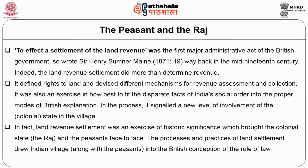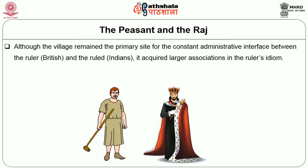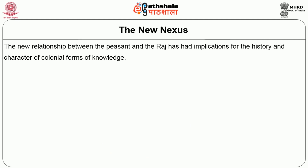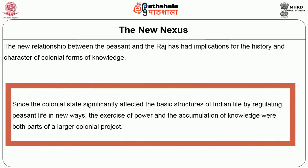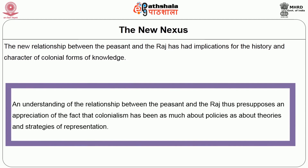The processes and practices of land settlement drew Indian villages along with the peasants into the British conception of the rule of law. Although the village remained the primary site for constant administrative interface between the ruler British and the ruled Indians, it acquired larger associations in the ruler's idiom. This module is an attempt to understand the contours of the relationship between the peasant and the Raj, which has had implications for the history and character of colonial forms of knowledge. Since the colonial state had significantly affected the basic structures of Indian life by regulating peasant life in new ways, the exercise of power and accumulation of knowledge were both parts of larger colonial projects.